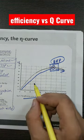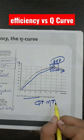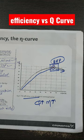So as the Q increases, your efficiency will also increase to a certain point, and after that your efficiency will decrease. I hope you understood that.